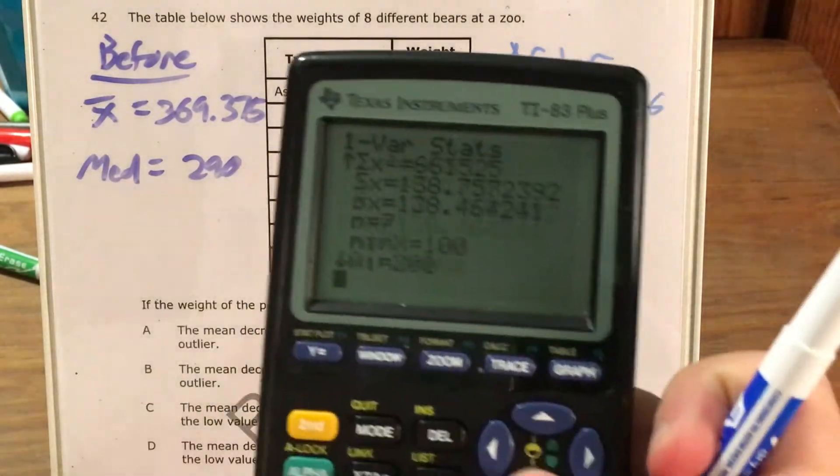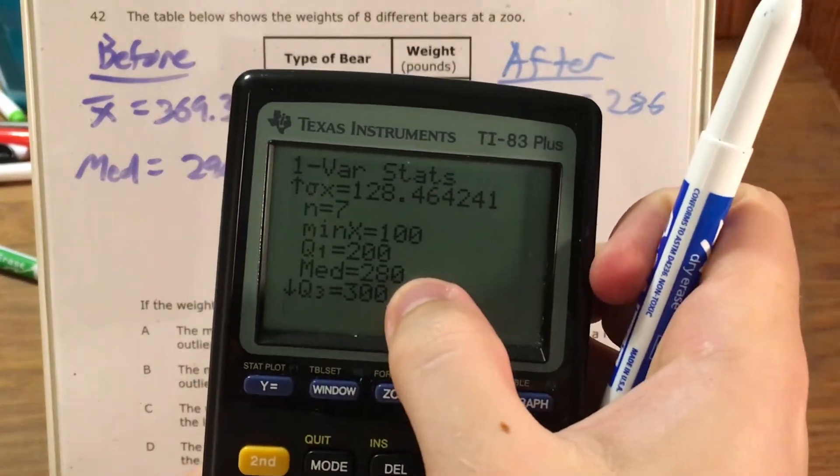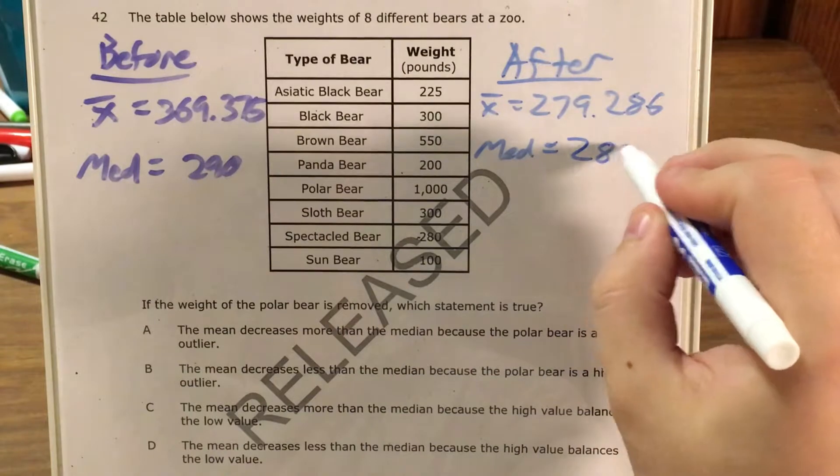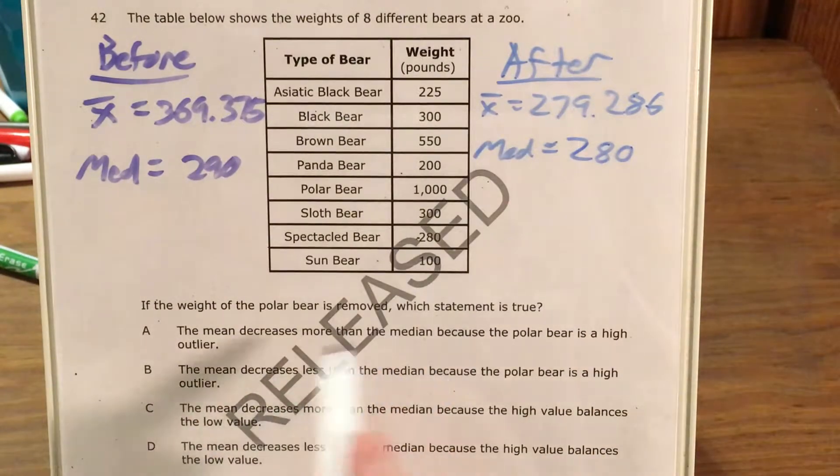Then my median, I can keep scrolling down until I find that it's 280. So the answer choices, now that we're ready to look at those, seem to all be interested in how much the mean decreases and how much the median decreases.